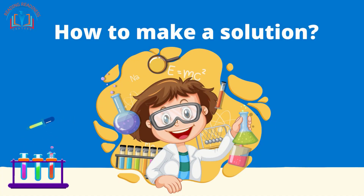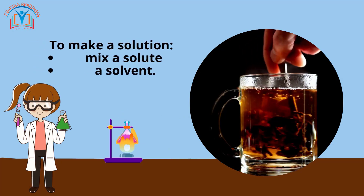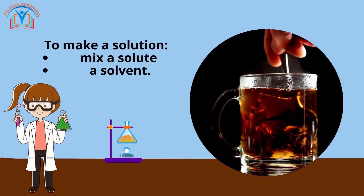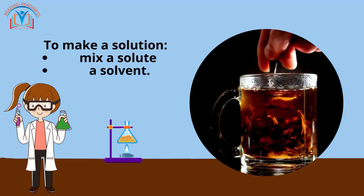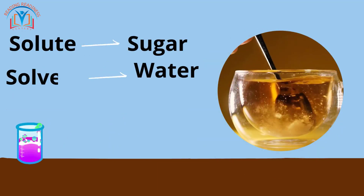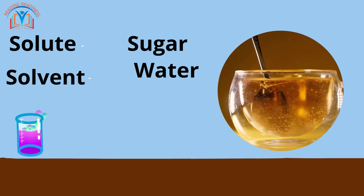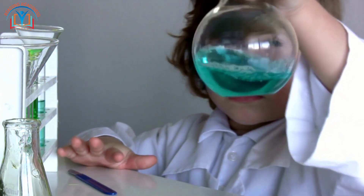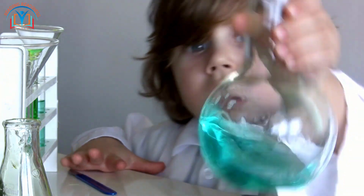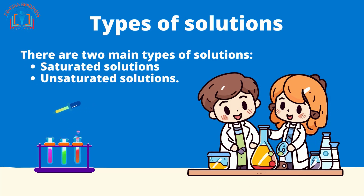How to make a solution. To make a solution you need to mix a solute and a solvent. The solute is the substance that dissolves, and the solvent is the substance that the solute dissolves in. For example, to make a solution of sugar water, the solute is sugar and the solvent is water. To make a solution you can mix the solute and solvent together by stirring, shaking, or heating them.